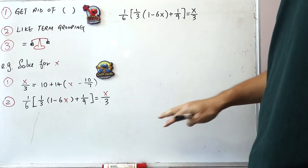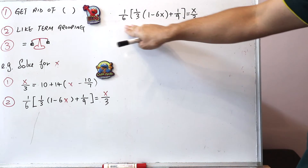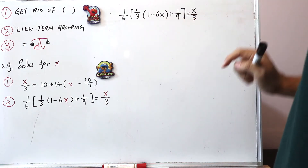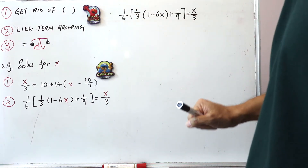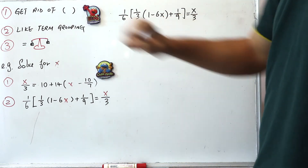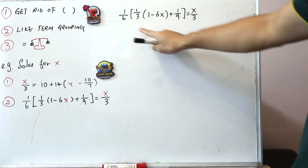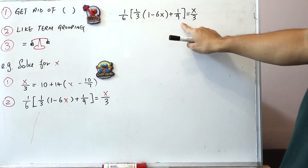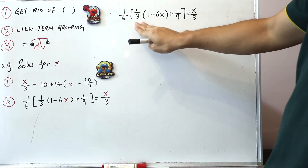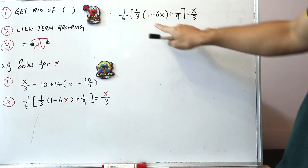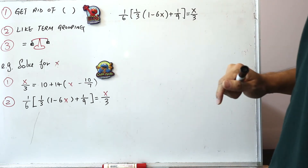Now let's take a look at question number 2. For highlight number one — get rid of the brackets — we can see there are square brackets and round brackets. Let's deal with each bracket one at a time, starting with the round brackets.